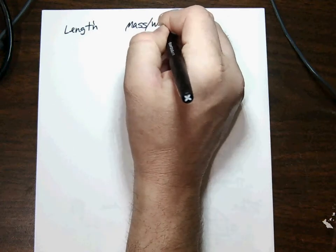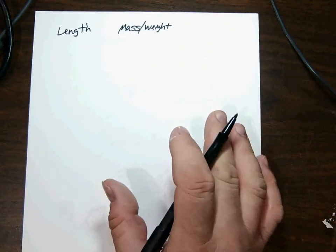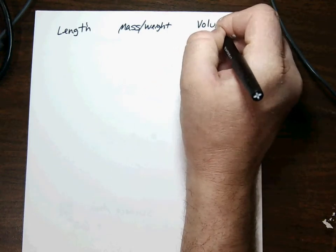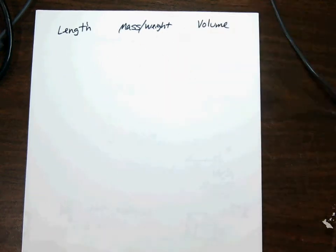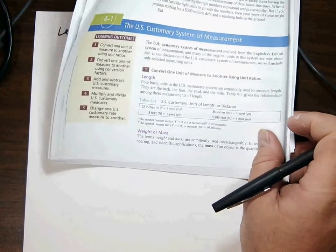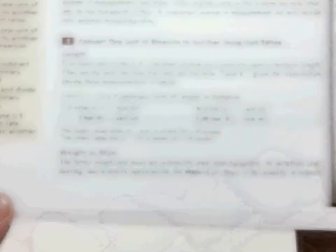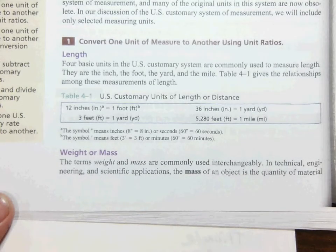In physics class I'd be on your case about the difference between mass and weight, but right now it's not important. Let's talk about length. You probably won't have to memorize all the conversion factors — you'd likely be given most of them. The key ones: 12 inches in a foot, 3 feet in a yard, 36 inches in a yard, and 5,280 feet in a mile.